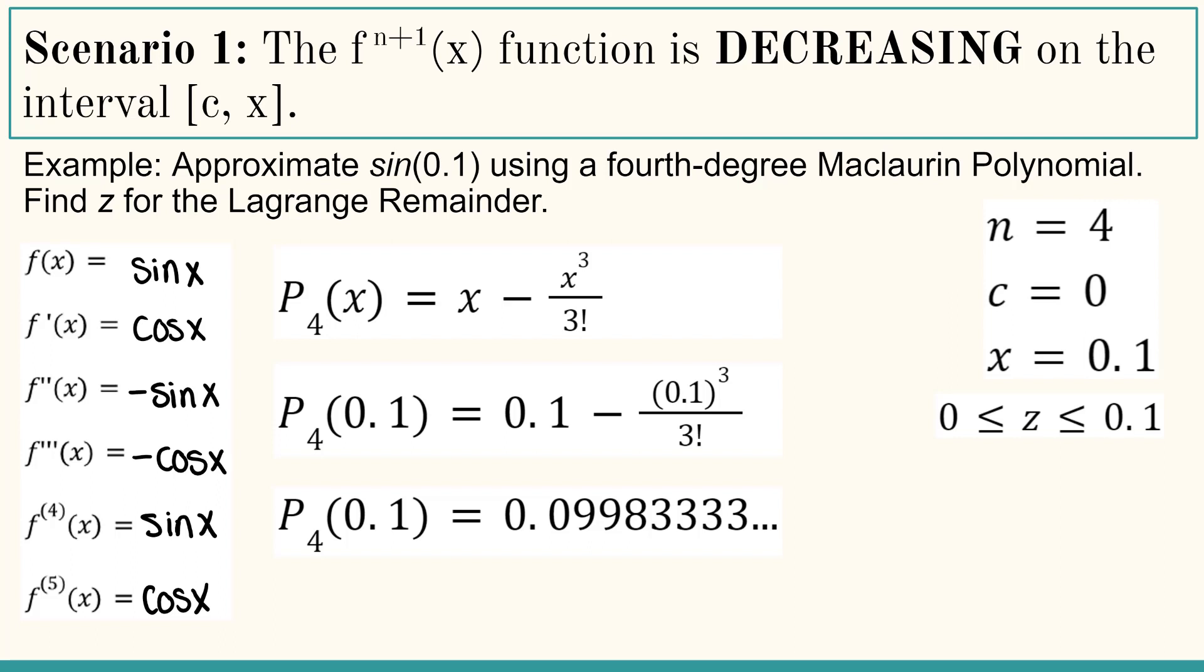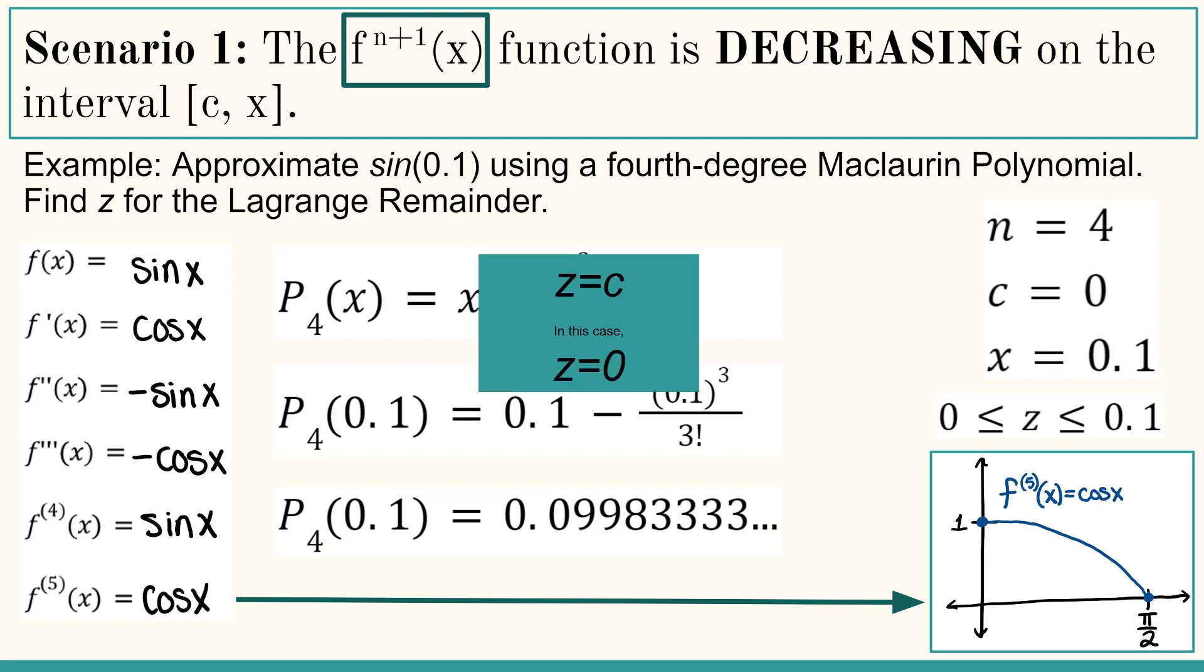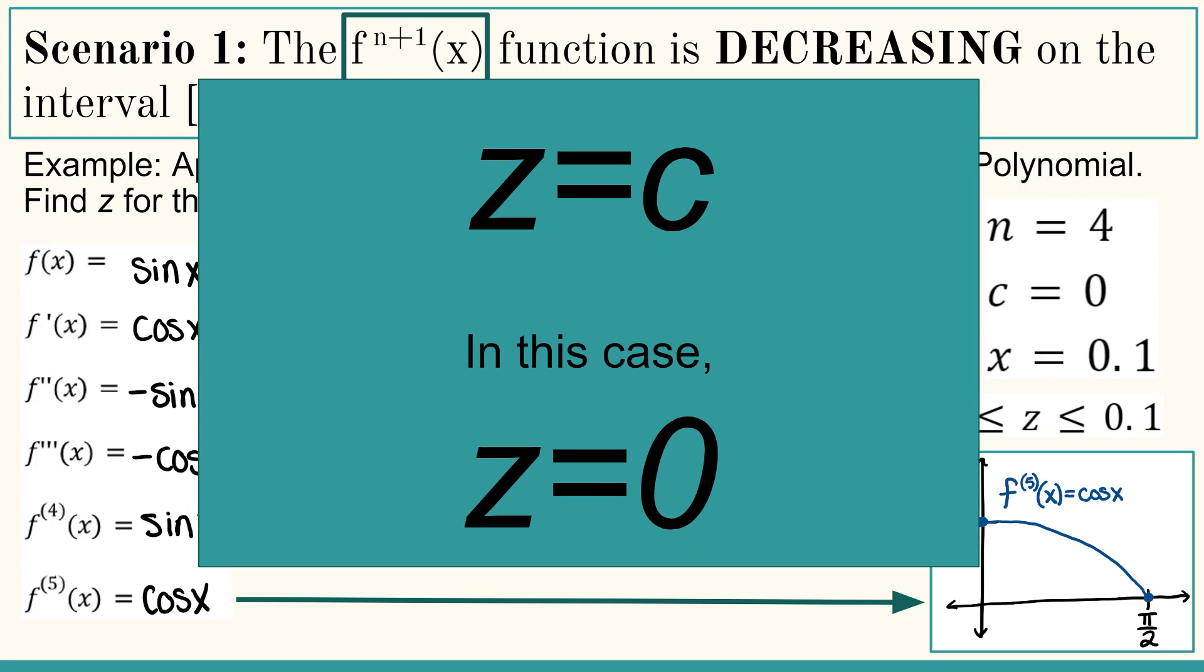So how do we choose z? In our Lagrange formula, we're looking for the n plus 1st derivative. And that n plus 1st derivative is the fifth derivative of sine x, which is cosine x. What does cosine x look like on the interval 0 to 0.1? The x that would give us a maximum possible y value would be our left endpoint, which is 0, our center. So when our function is decreasing, z should equal c. And in this case, because we have a Maclaurin polynomial, our center is 0, making z equal 0.